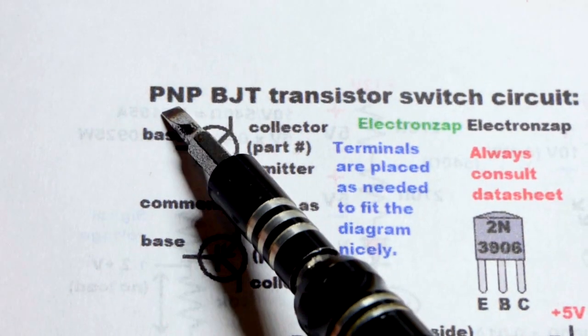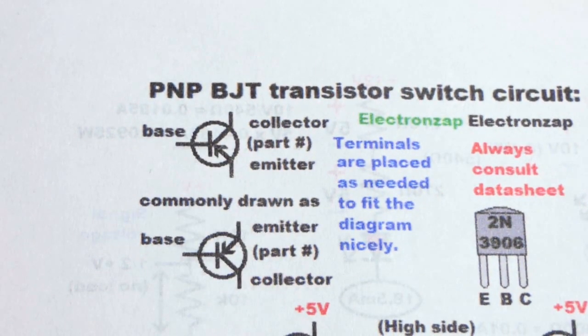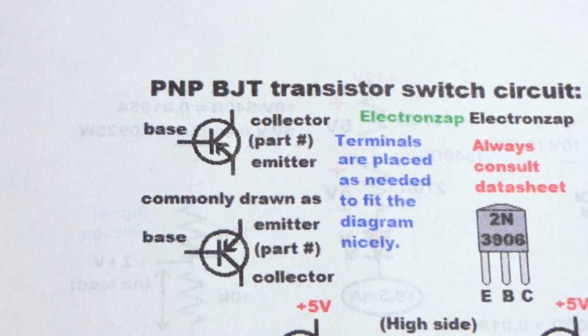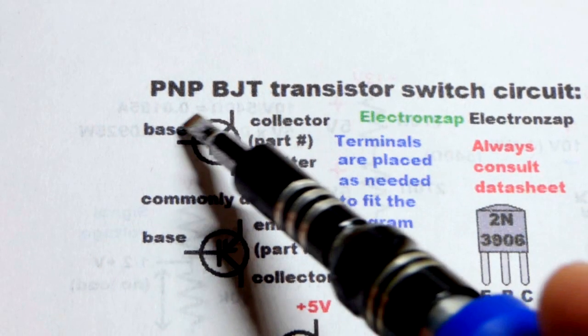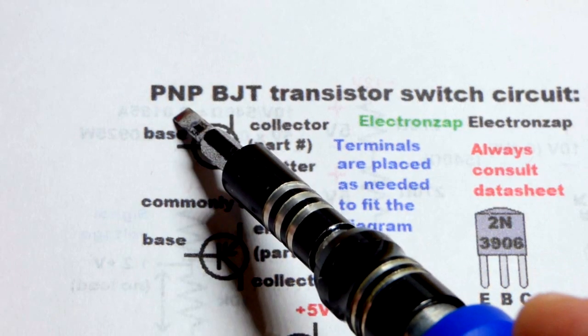Last video, we looked at the NPN bipolar junction transistor wired as a switch. Basically, it's the same circuit, except since it being a PNP instead of NPN, it has opposite chemistry.